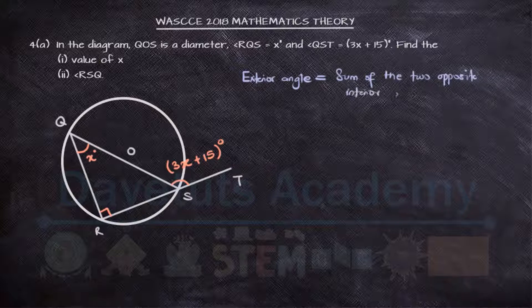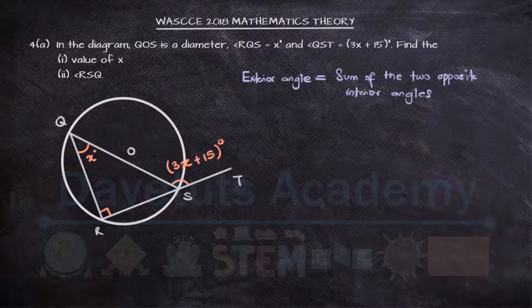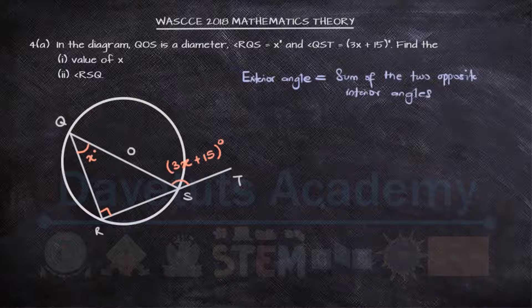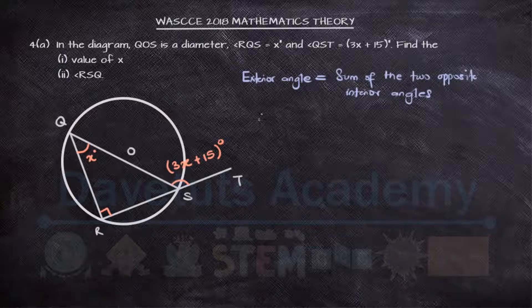So I can use that to solve for the value of X. Now the exterior angle is 3x plus 15, which is angle QoSd.